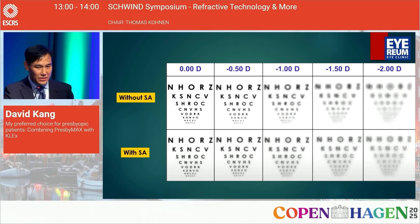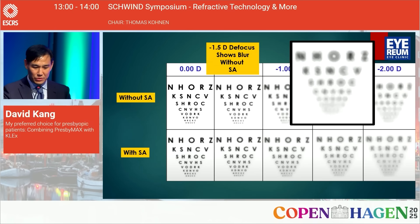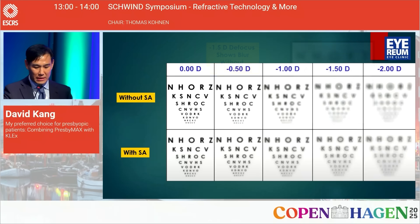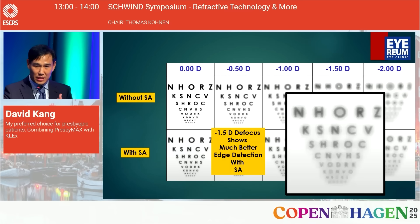Consider a row of increasing amounts of myopic defocus: at minus 1.50 without spherical aberration there is much blur, but with spherical aberration the edge detection is much enhanced. This is due to the particular characteristics of this aberration, which is actually a natural function of our human visual system.